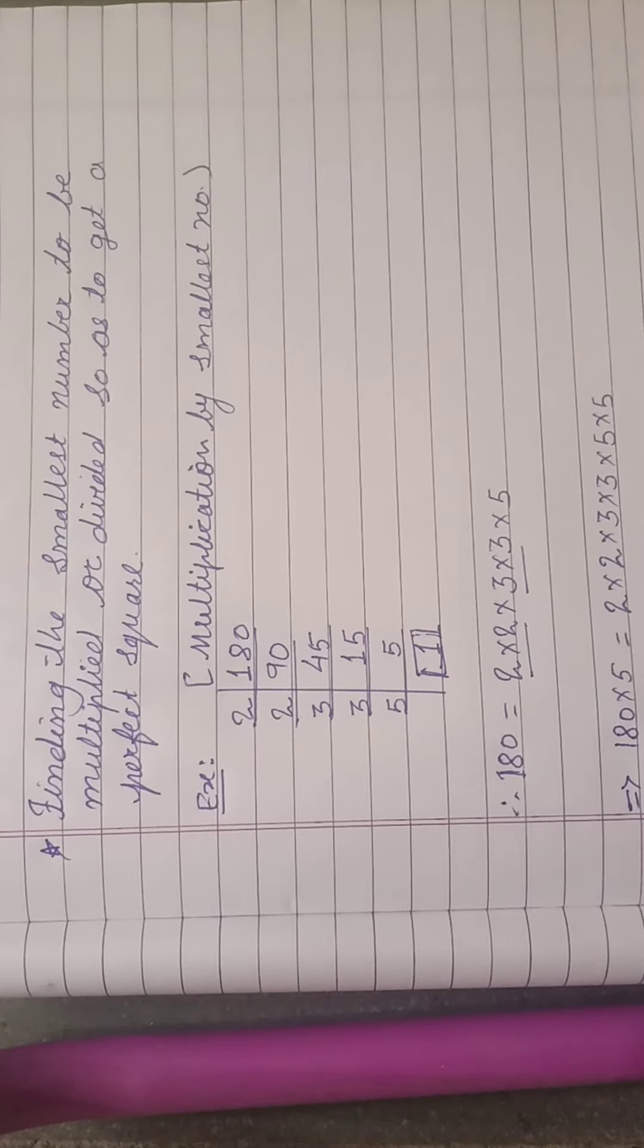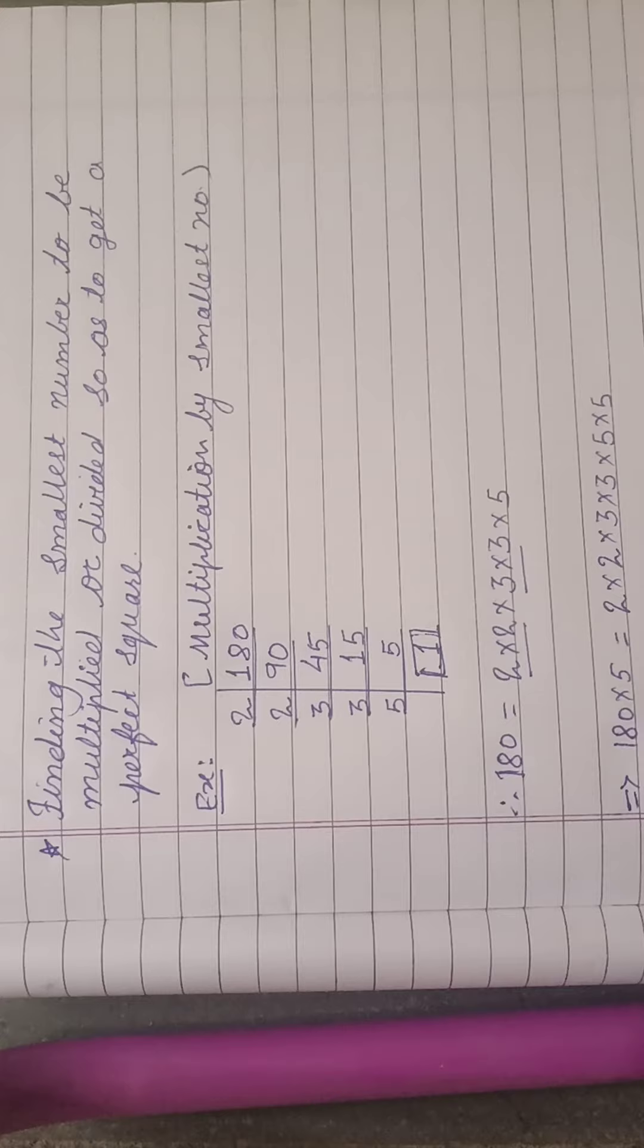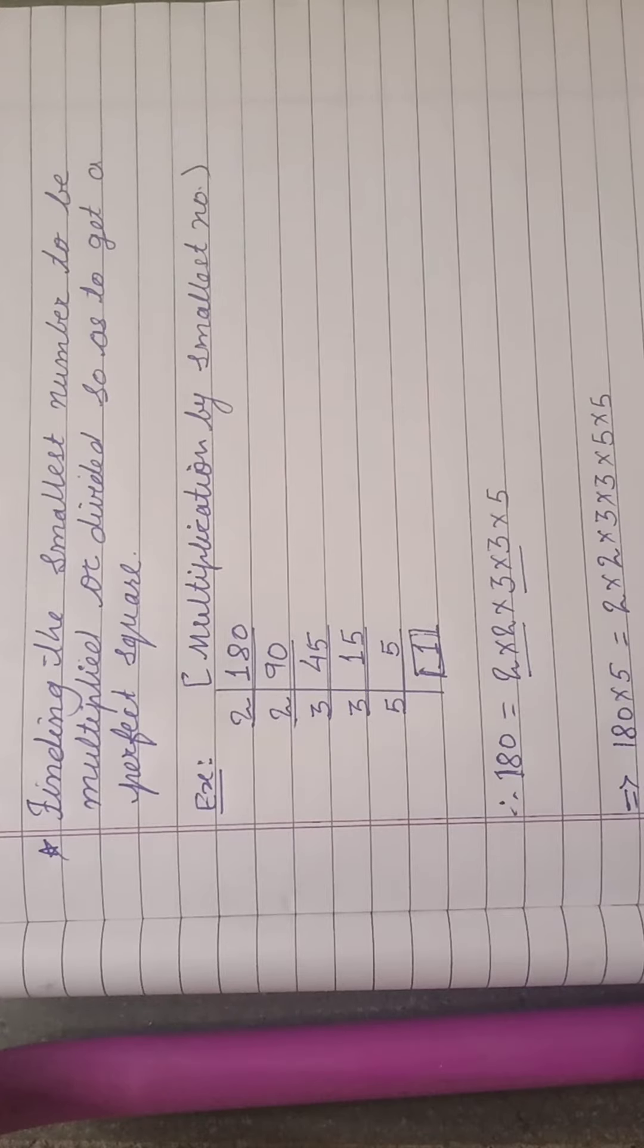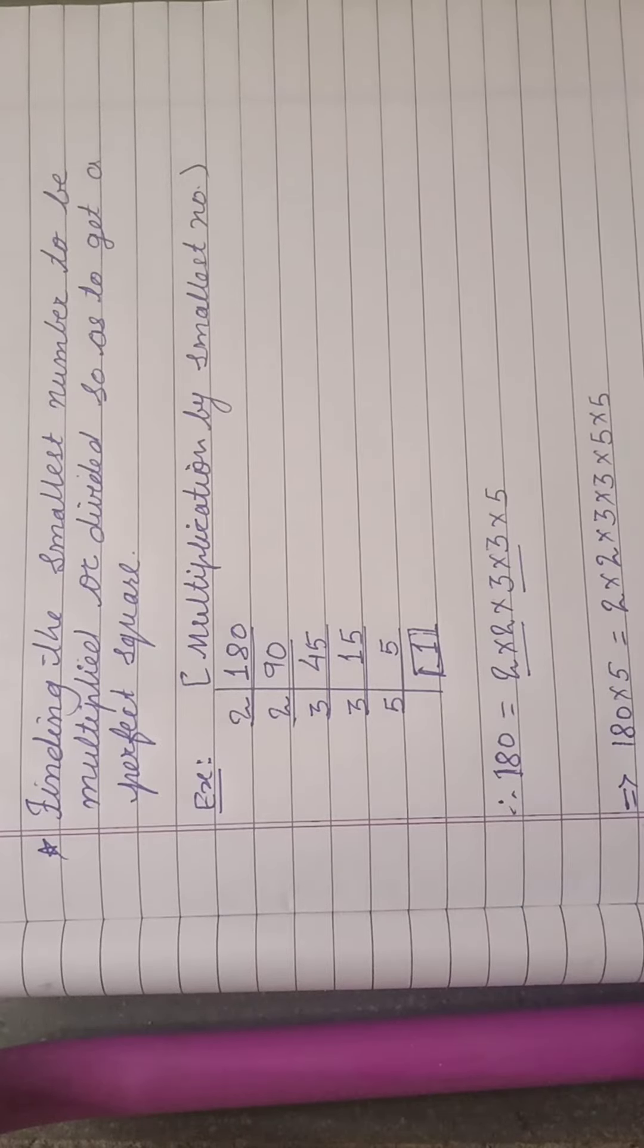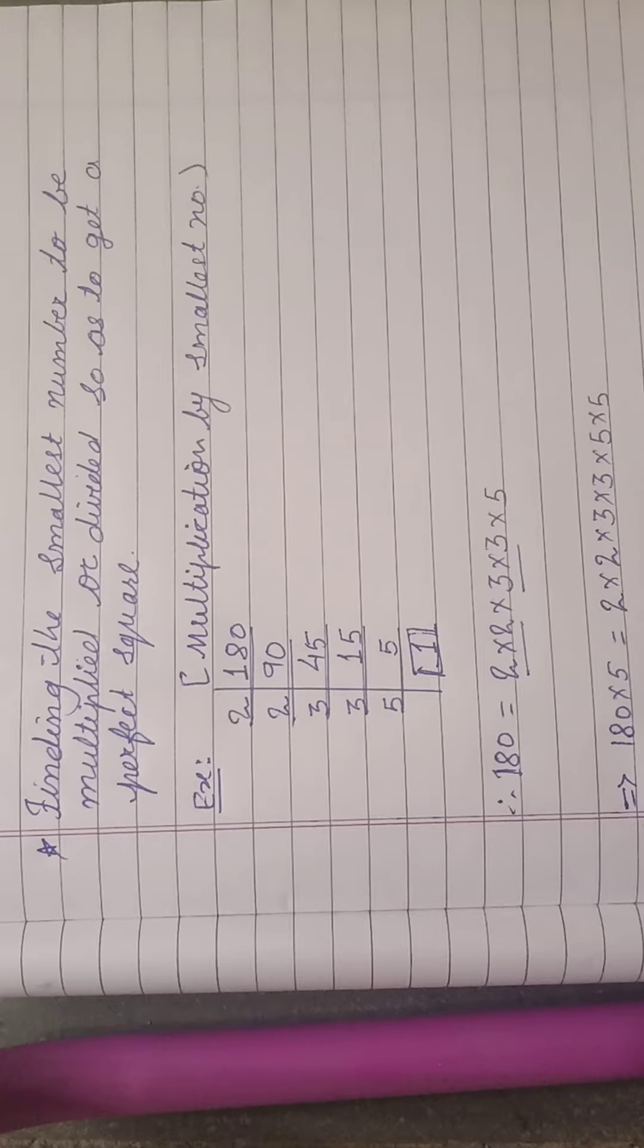In that, one number was a perfect square and one number was not a perfect square. For that, we have seen we need all the factors of the number in pairs.